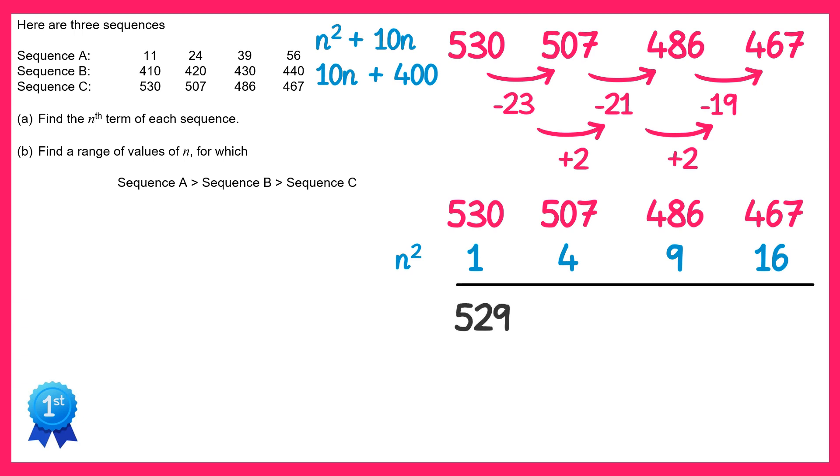So 530 take away 1 is 529, 507 take away 4 is 503, 486 take away 9 is 477, and 467 take 16 is 451. This is now the linear part of our sequence.